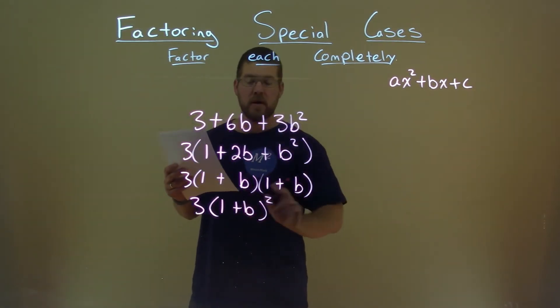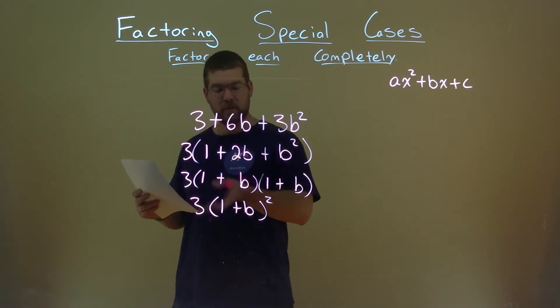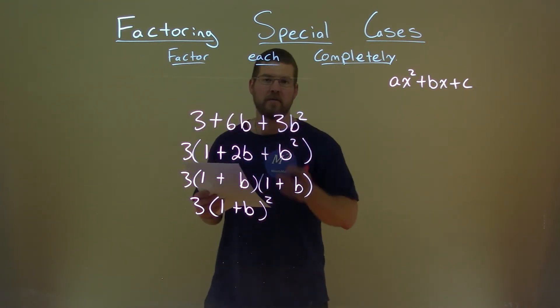It goes through the same thing, right? So now we have a final answer here. 3 times 1 plus b all squared.